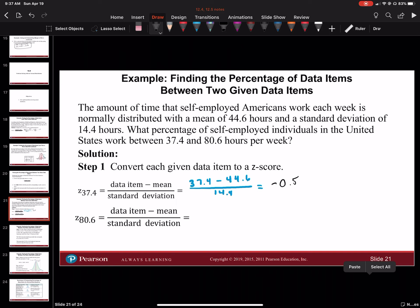Now we're going to do the same thing with 80.6. We're going to do 80.6 minus 44.6 all over 14.4, and this equals 2.5.